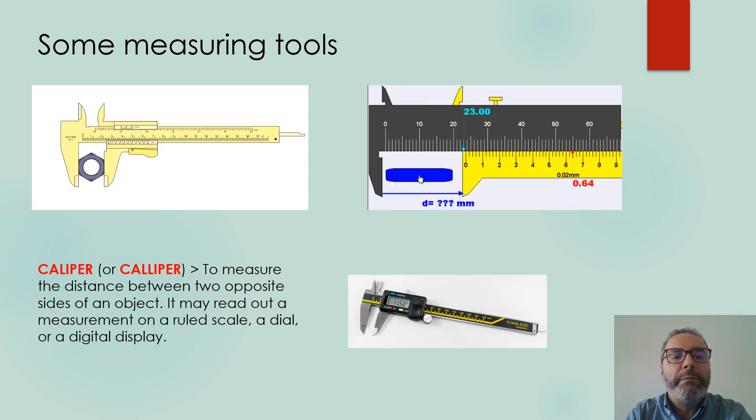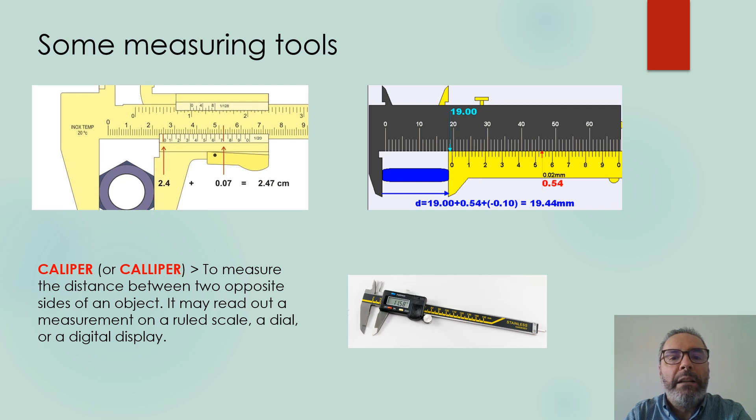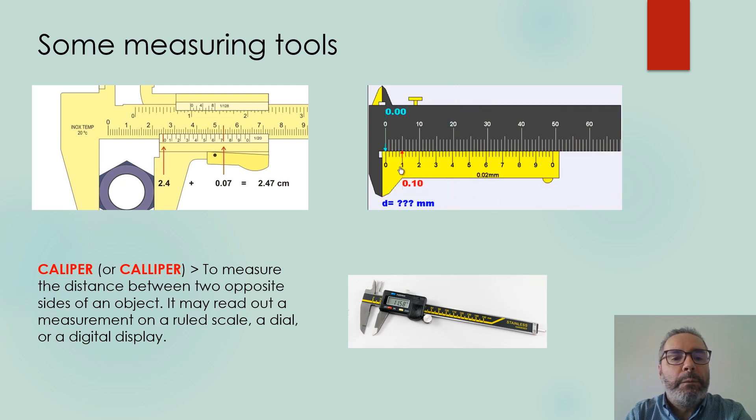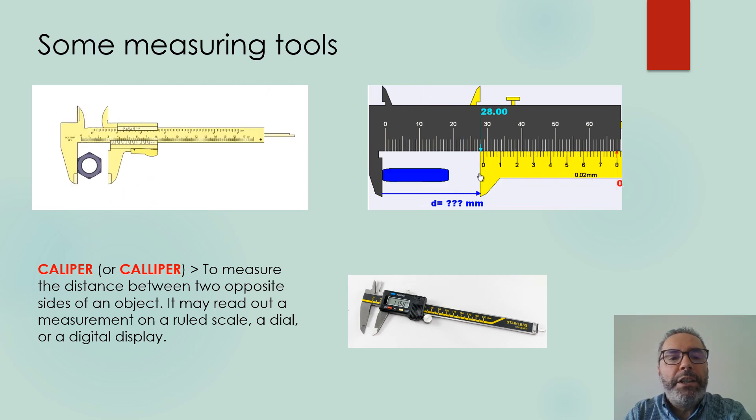Another useful instrument is what we call the caliper. An instrument used to measure the distance between two opposite sides of an object. It may permit reading out a measurement on a rule scale or dial or a display which is digital. Here the picture is of a digital caliper.